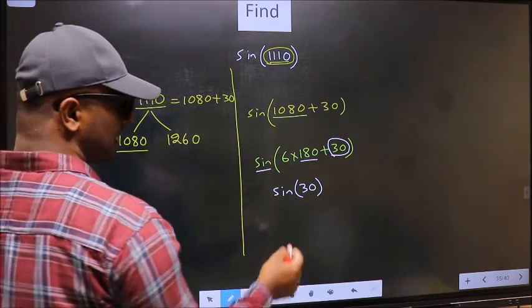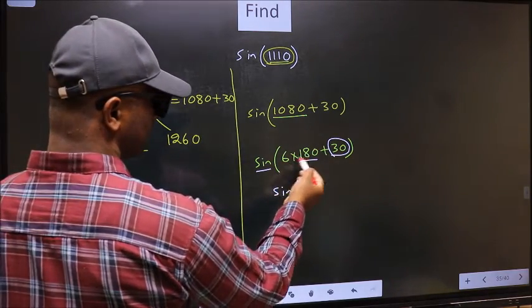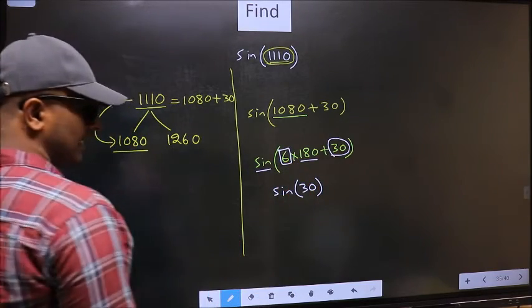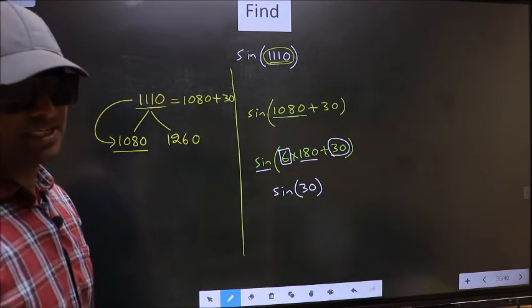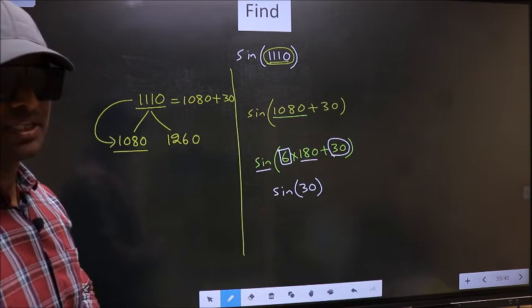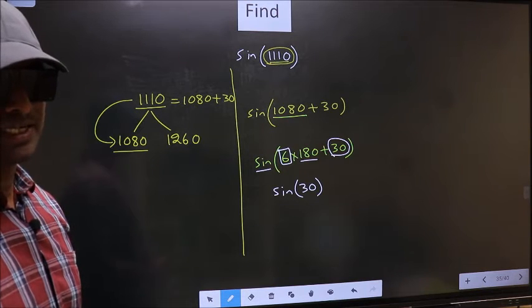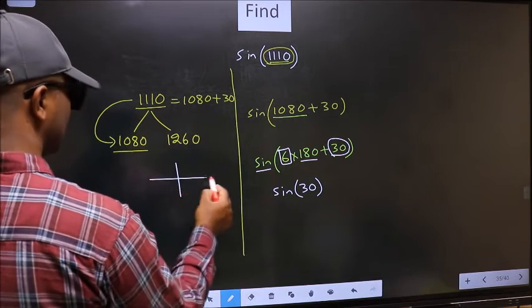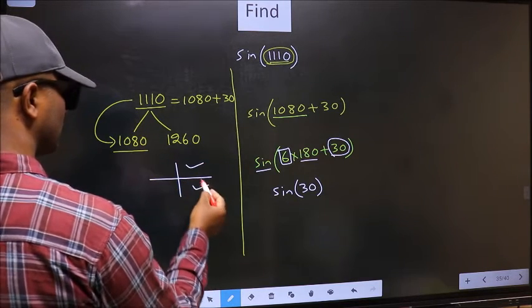To answer that, you should look at the number before 180. That is 6. And 6 is even. And all the even multiples of 180 lie either in the first or in the fourth quadrant.